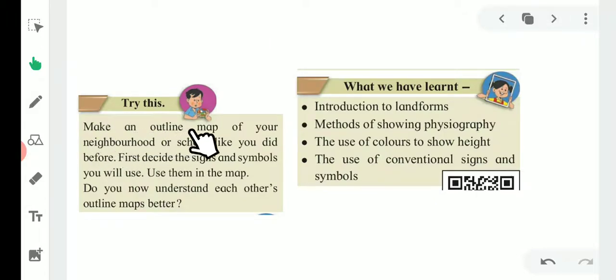Try this: Make an outline map of your neighborhood or school like you did before. You have to make an outline map. You have to use signs and symbols in the map. Do you now understand each other's outline maps better? You have to take the map of your friend too, then you have to turn this activity in your notebook or on a page.